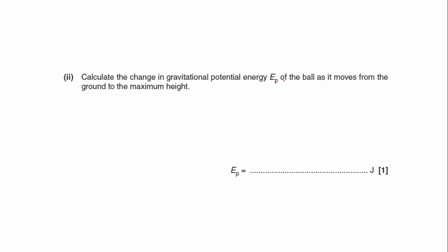Calculate the change in gravitational potential energy, EP, of the ball as it moves from the ground to the maximum height. Well, we know it's going up by 2 metres, and we know that the mass of the ball was 0.16 kilograms. So, the gain in gravitational potential energy is going to be M G H. So, we've got 0.16 times 9.81 times 2. So, it's lifted off the ground. Sorry, it's gained 3.1 joules of potential energy.